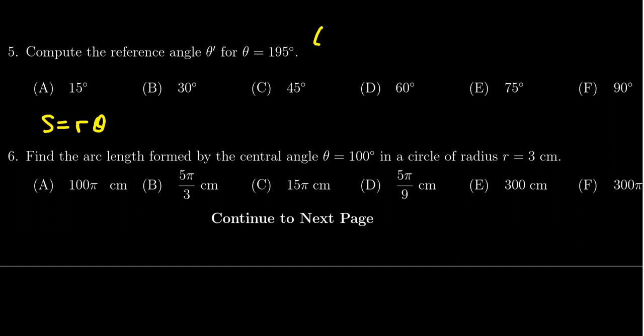If θ = 100°, to convert to radians we multiply by π/180°. We need to simplify this fraction. Note that we don't have access to a calculator on this part of the test, so we'll do it by hand.